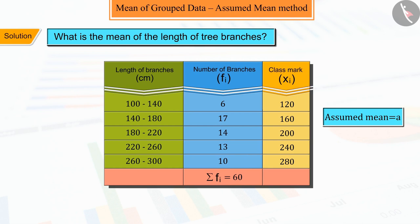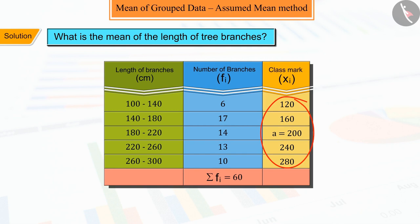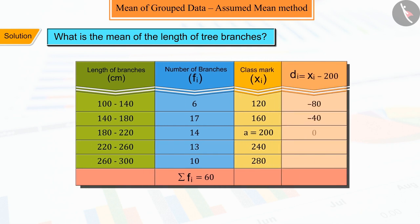which comes somewhere between x1, x2 and xn. Hence, from the table, we choose A equals to 200, where we find the difference di between A and each xi and find the deviation of xi from A.